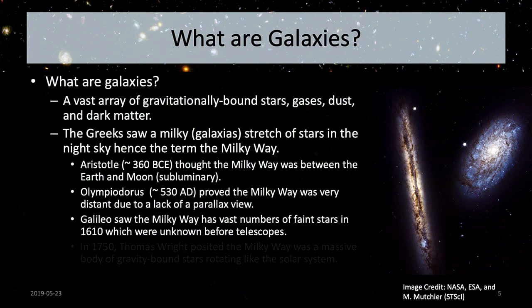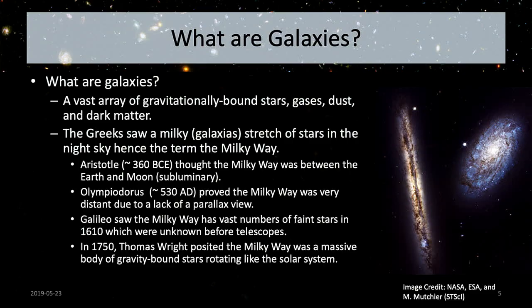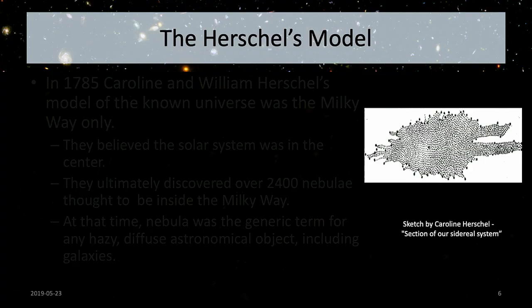Moving to the age of Galileo, he was the first to use a telescope for astronomical observations and was able to see that the big stripe of stars wasn't just a haze — it was actually a haze of stars, point sources of light scattered through that milky stripe. Thomas Wright then thought about the Milky Way as a gravitationally bound body of stars, similar to how the solar system works, with stars orbiting around a common center of gravity.